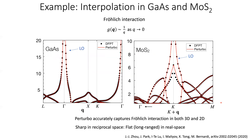Here is an example of interpolation of the Fröhlich interaction in gallium arsenide and MoS2. The black markers are direct DFPT calculations and the red lines are interpolated results from Perturbo. Perturbo accurately captures the sharp divergences near the gamma point for the LO phonon mode in both gallium arsenide and MoS2. This type of interaction is sharp in reciprocal space, meaning it is flat and mostly long-range in real space.